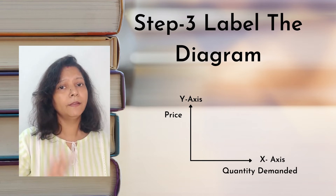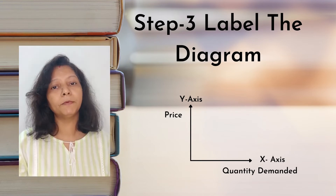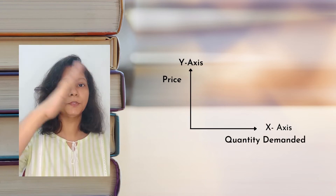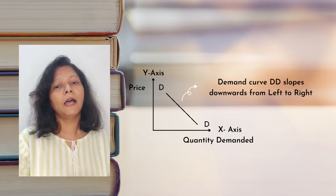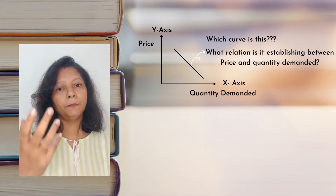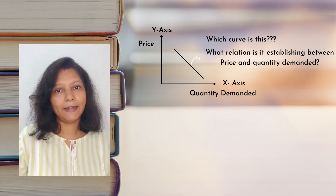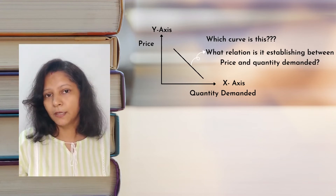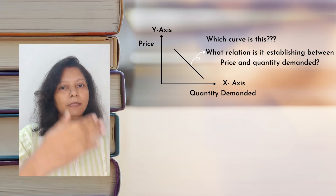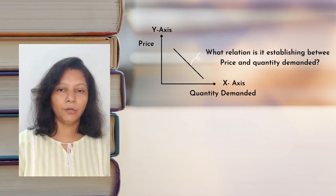The third important thing is that many students simply don't label the diagram. It is utterly important to label the diagrams — put what is on the Y axis, what is on the X axis, what the curve is, how it is sloping, what it is telling, and what the name of that curve is. Many times students have a Y axis and an X axis, but the curve is just standing there with no name to it. As an examiner, I would not know what you are trying to tell me. Without labels, the diagram really stands no value.